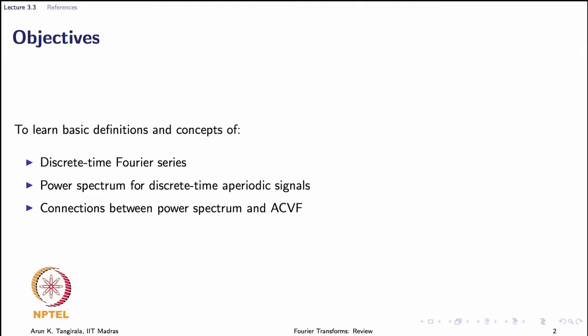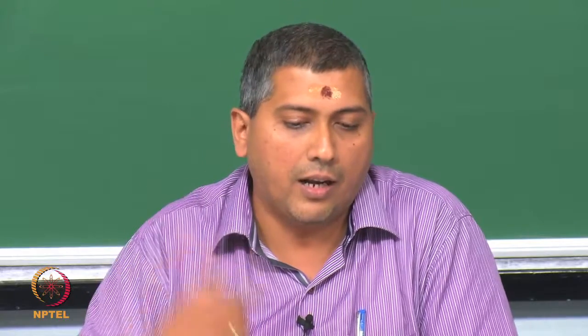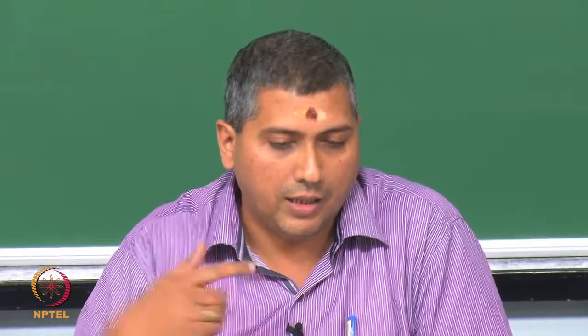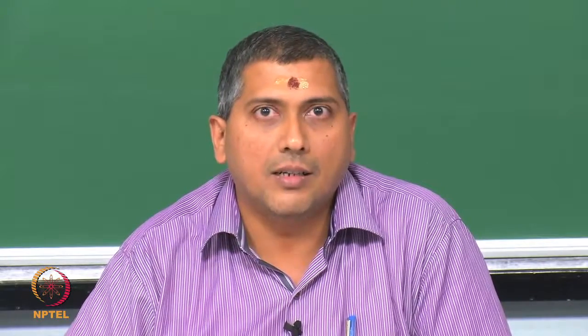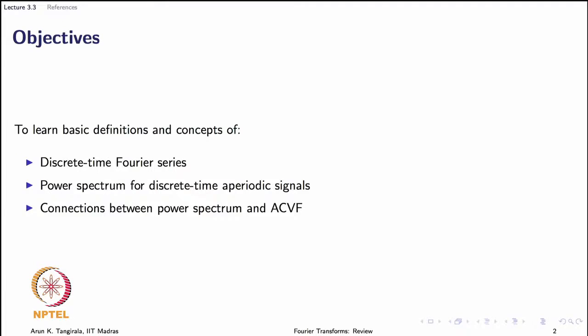The discrete time Fourier series is concerned with discrete time periodic signals, just as we had continuous time Fourier series for continuous time periodic signals. Naturally, we are going to talk about power spectrum, because the energy spectral density vanishes as we saw in lecture 3.2. We will also study a connection between the power spectrum and the auto covariance function.